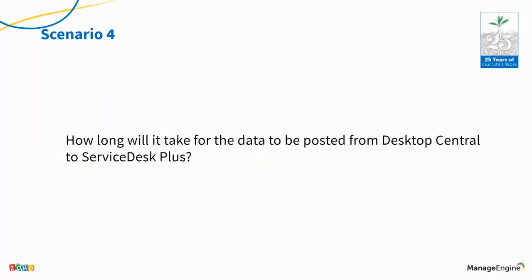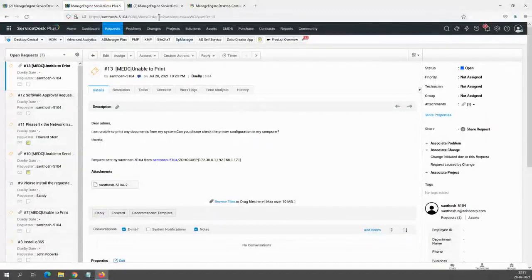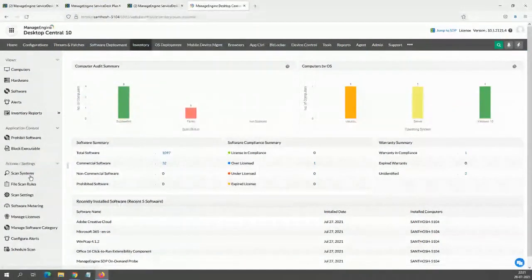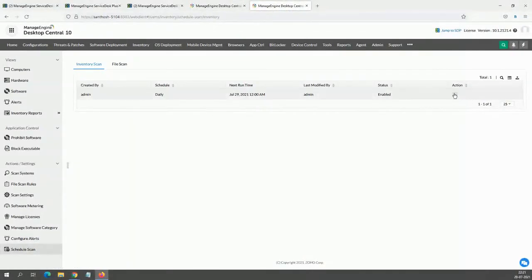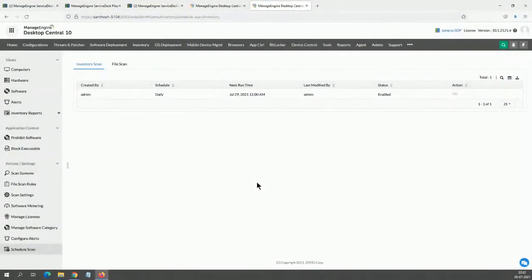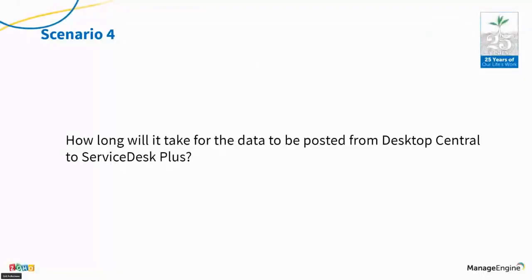How long does it take for data to be posted? This is a frequently asked question. Every 90 minutes, the agent talks to Desktop Central server. You can also schedule scans — daily, weekly, or monthly. In the asset management inventory section, I can go to Scan Systems and set the schedule as needed. But if there are any immediate changes — hardware changes or software changes — we log those as tickets as well. You can configure alerts for any changes.